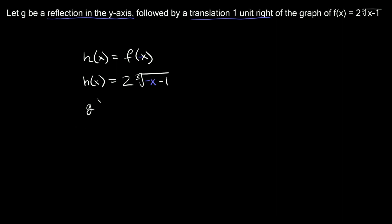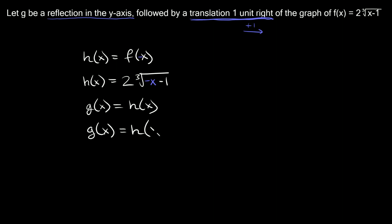Now we move on to the next transformation: g of x equals h of x transformed. We have to apply this second transformation — a translation one unit to the right — to h of x. Whenever you want to move a function left or right, it goes inside the parentheses with the x. You put the opposite number of the spaces you want to move. Moving one space to the right means we put negative one inside, so g of x equals h of x minus one.